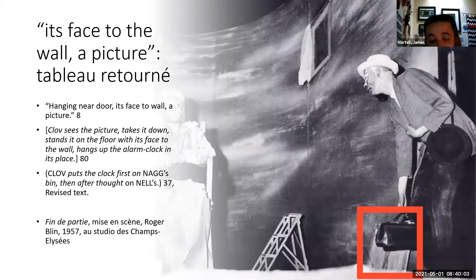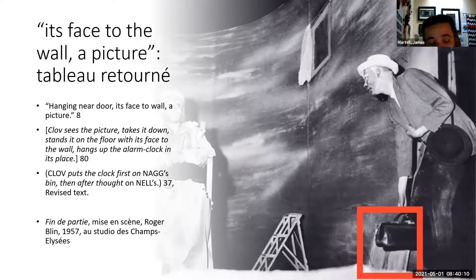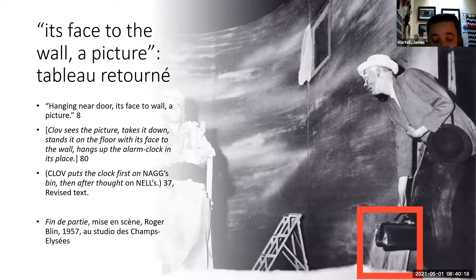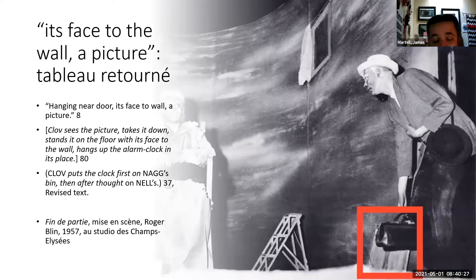Here in the slide we can see it still in the first staging — this is the first staging of Endgame in Paris by Roger Blin in 1957. While the picture disappeared as early as the Faber edition of 1958, as well as in the Riverside production, it was briefly reinstated for the Schiller Theater production in 1967 by Beckett.